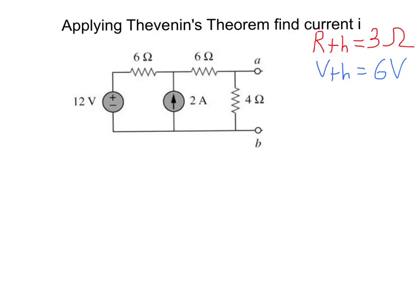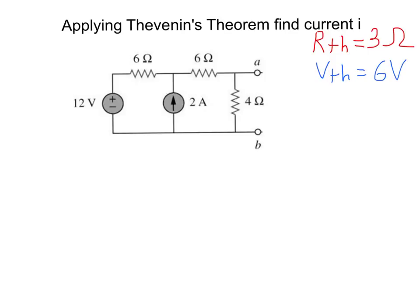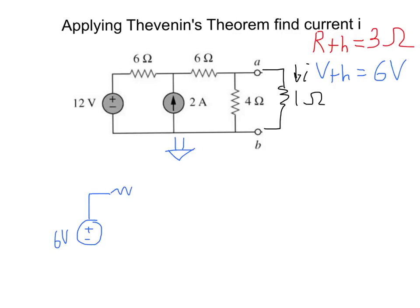Now let's see what we can do with these two equivalent parameters, R Thevenin and V Thevenin. The question was to find current I — the current through the load, the 1 ohm resistor. If we place the resistor back, it was connected exactly across A and B. So across A and B we had the 1 ohm resistor, and current I flows through it.